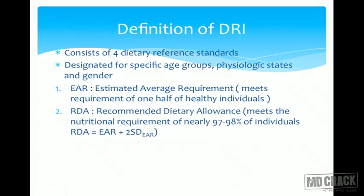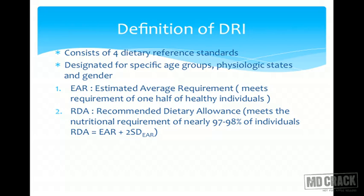The second component is RDA — Recommended Dietary Allowance — which meets the nutritional requirements of 97 to 98 percent of individuals. RDA is calculated as EAR plus two standard deviations of EAR. So while EAR meets needs of 50% of the population, RDA meets needs of 98% of individuals.